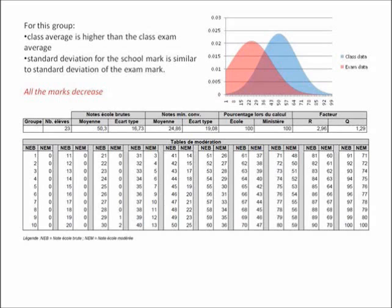The message here is that if the set of class marks is similar to the set of exam marks in terms of average and standard deviation, there will be little change in the student's school marks. In this next example, the two curves are still basically the same shape — suggesting a similar standard deviation — but the pink curve, the exam data, is to the left of the blue curve, the school data. The school average was significantly higher than the exam average. Not good news for student school marks — every single student had their school mark go down.